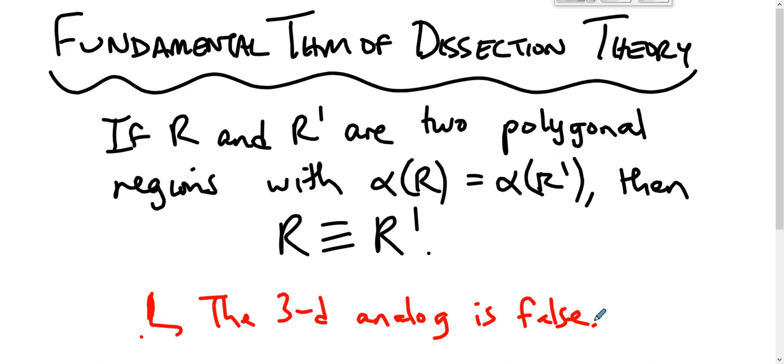You can show that if you take two polyhedra, which would be the three-dimensional equivalent, you take two polyhedra of equal volume, it is not necessarily true that you can break the one up into tetrahedra and rearrange them to achieve the other one. Sometimes it's true, sometimes it's not. The 3D analog is false.